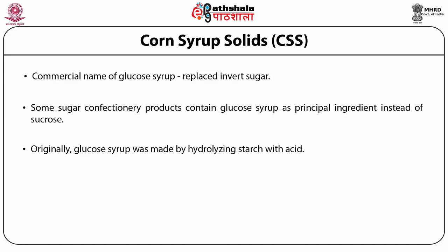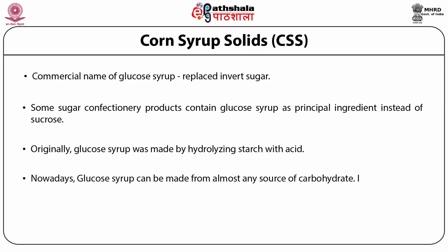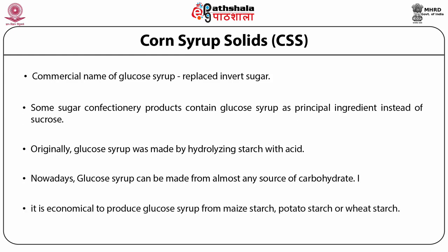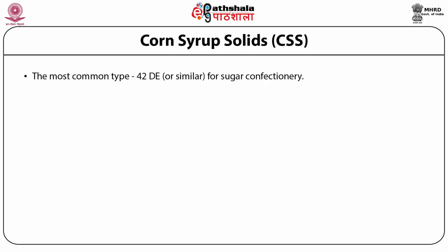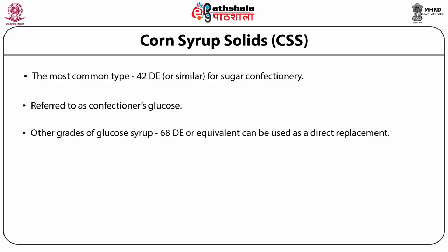Originally, glucose syrup was made by hydrolysing starch in the presence of acid, but nowadays glucose syrup can be made from almost any source of carbohydrate. It is economical to produce glucose syrup from certain starch sources like maize, potato, and wheat. The most common type of glucose syrup in sugar confectionery is 42 dextrose equivalent, also referred to as confectioners glucose. Other grades such as 68 dextrose equivalent have the same water activity as invert sugar syrup and can often be used as a direct replacement.